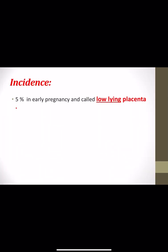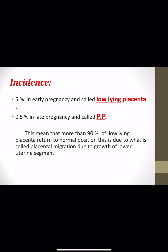Regarding the incidence of placenta previa: in early pregnancy the incidence is very high, about 5%, and it is called low-lying placenta. But in late pregnancy or the third trimester, the incidence becomes only 0.5%, meaning just one patient in every 200 pregnant women. This decrease is because more than 90% of low-lying placentas return to normal position, due to what is called placental migration.